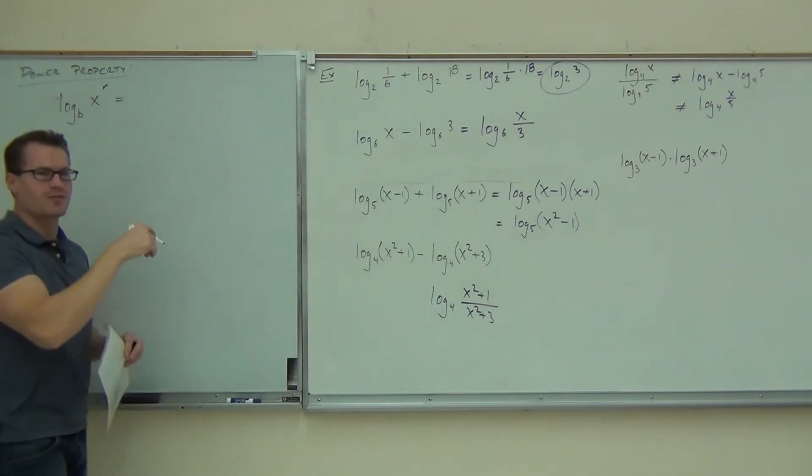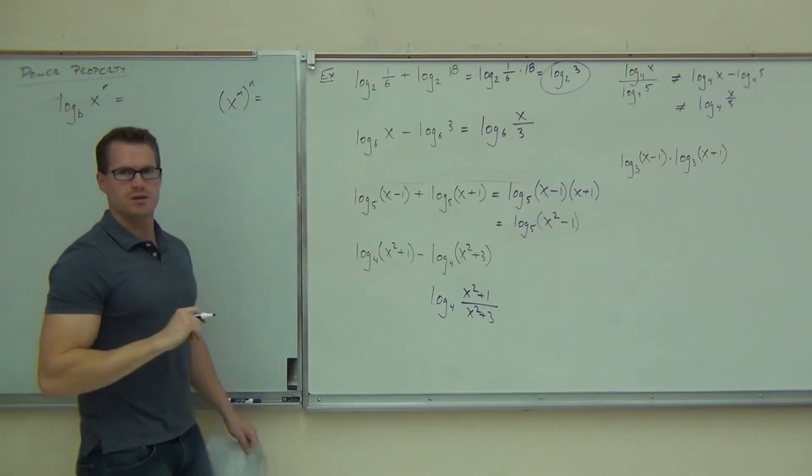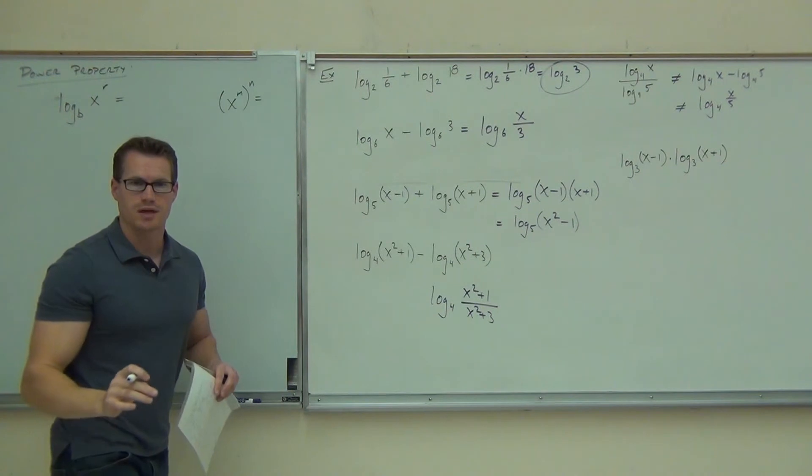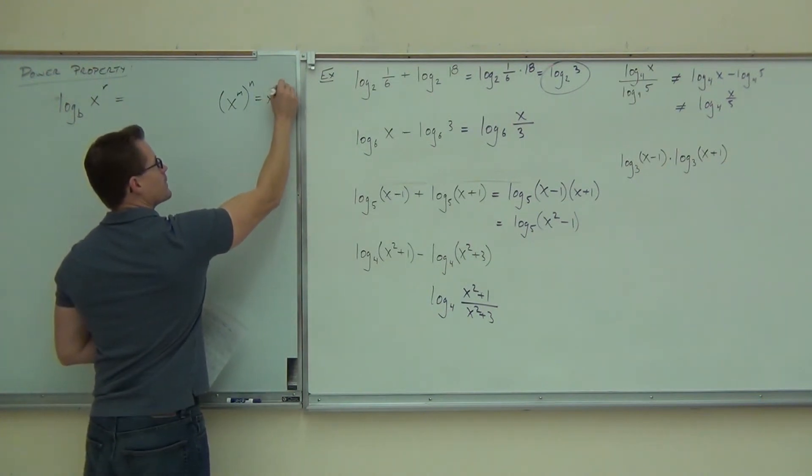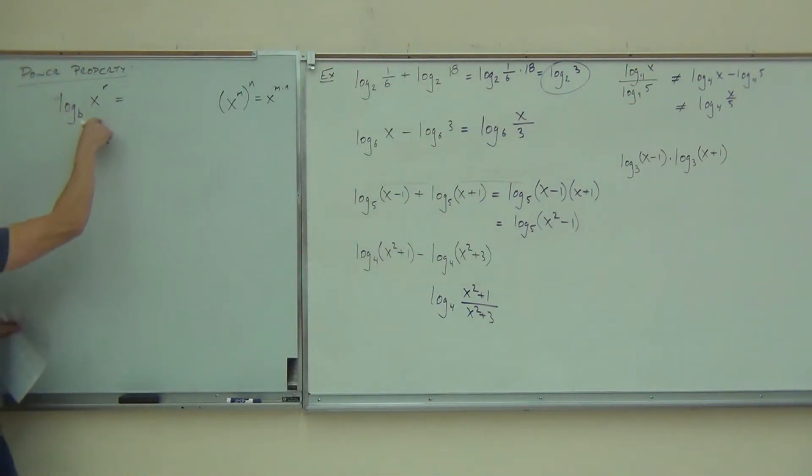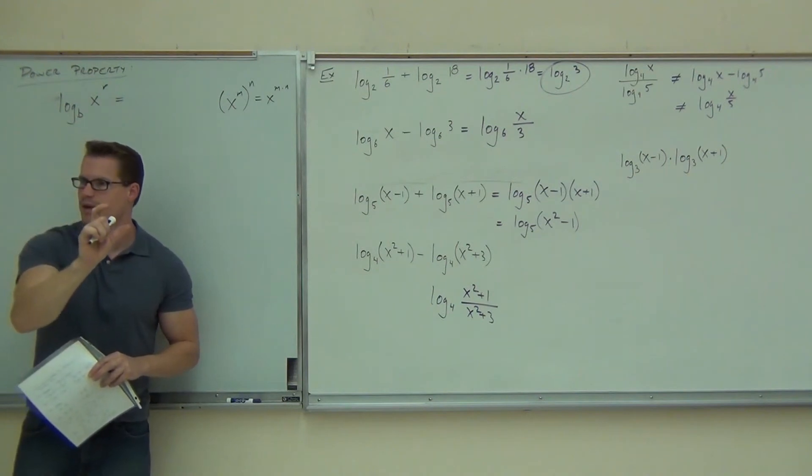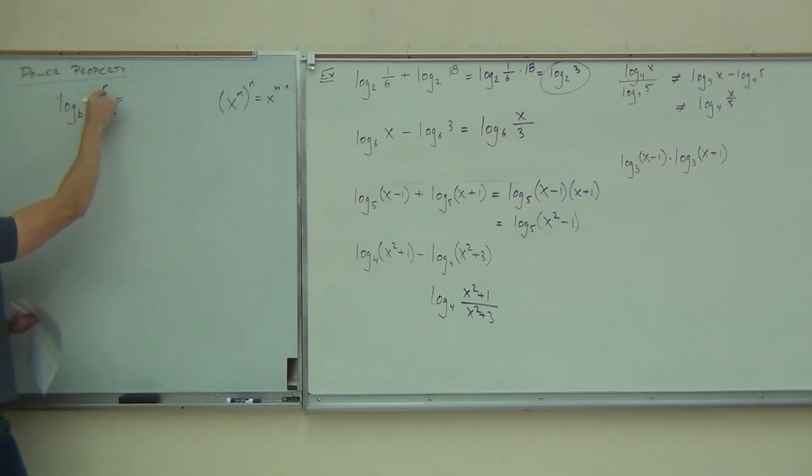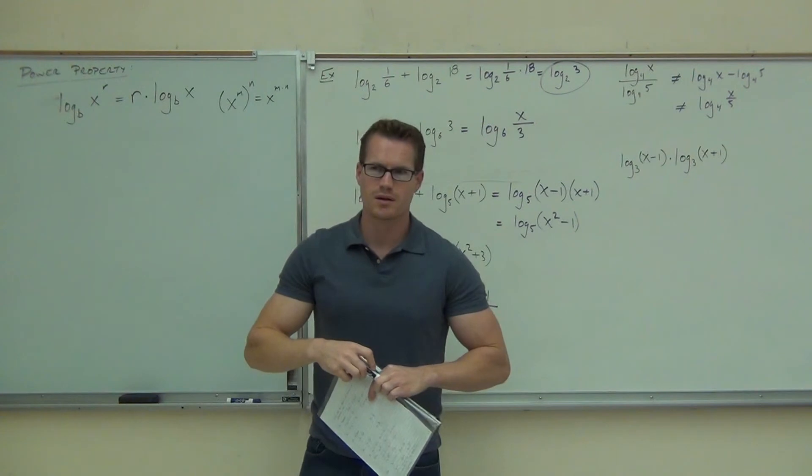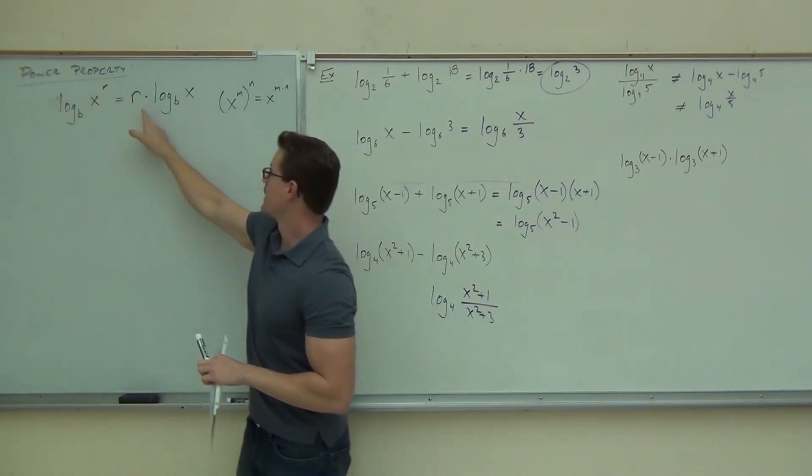Suppose you have a log of some expression raised to an exponent. We'll call that r. Log base b of x to the r. This is the coolest property. Now, here's why it's the coolest property. I'll do it over here with one of our rules that we're familiar with. What do you do when you have an exponent raised to an exponent? You multiply. Great. You multiply those exponents together, yes? And you get x to the m times n. This one is going to be very similar. This is so cool. Notice how this is pretty much represents an exponent, and this is another exponent. You with me on that? You multiply exponents together.